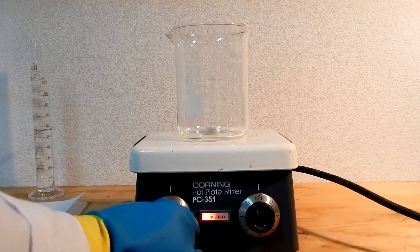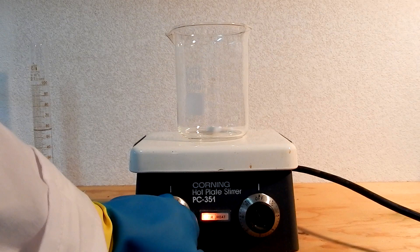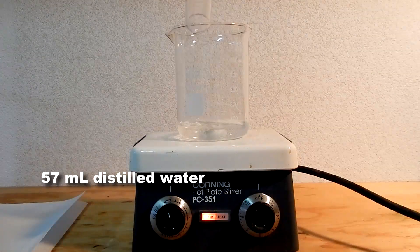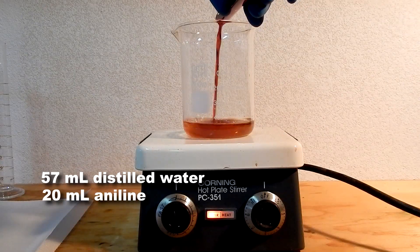Alright then, let's get started. Place a 600ml beaker on a magnetic stirrer and add to it 57ml of distilled water. Then add 20ml of aniline.